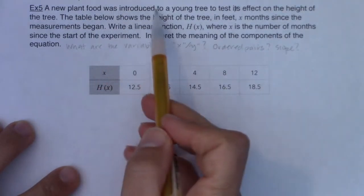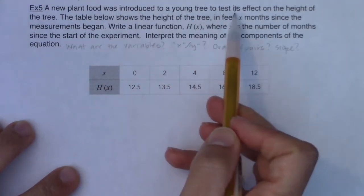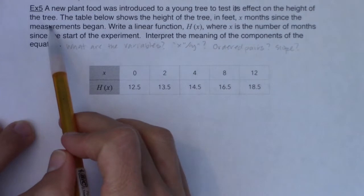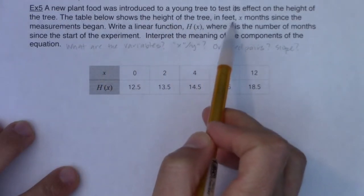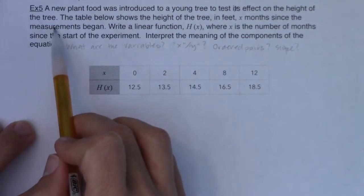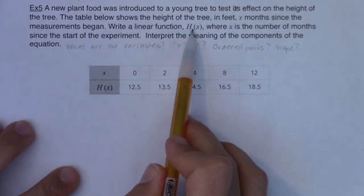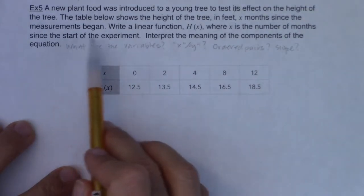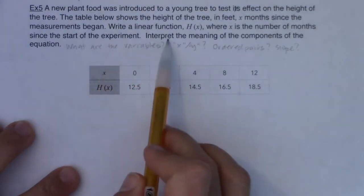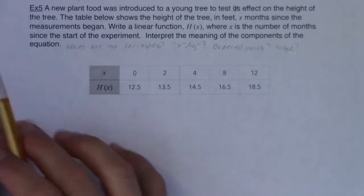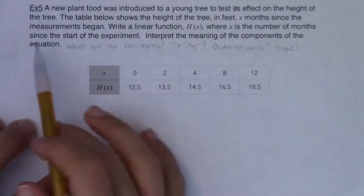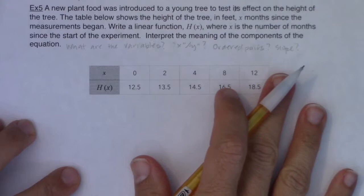So I'm going to read through this, and we're going to see what we can answer. So it says, a new plant food was introduced to a young tree to test its effect on the height of the tree. The table below shows the height of the tree, in feet, X months since the measurements began. Write a linear function, H of X, where X is the number of months since the start of the experiment. Interpret the meaning of the components of the equation. Okay, so there's a lot to unpack there, but let's think about what the variables are in this problem.